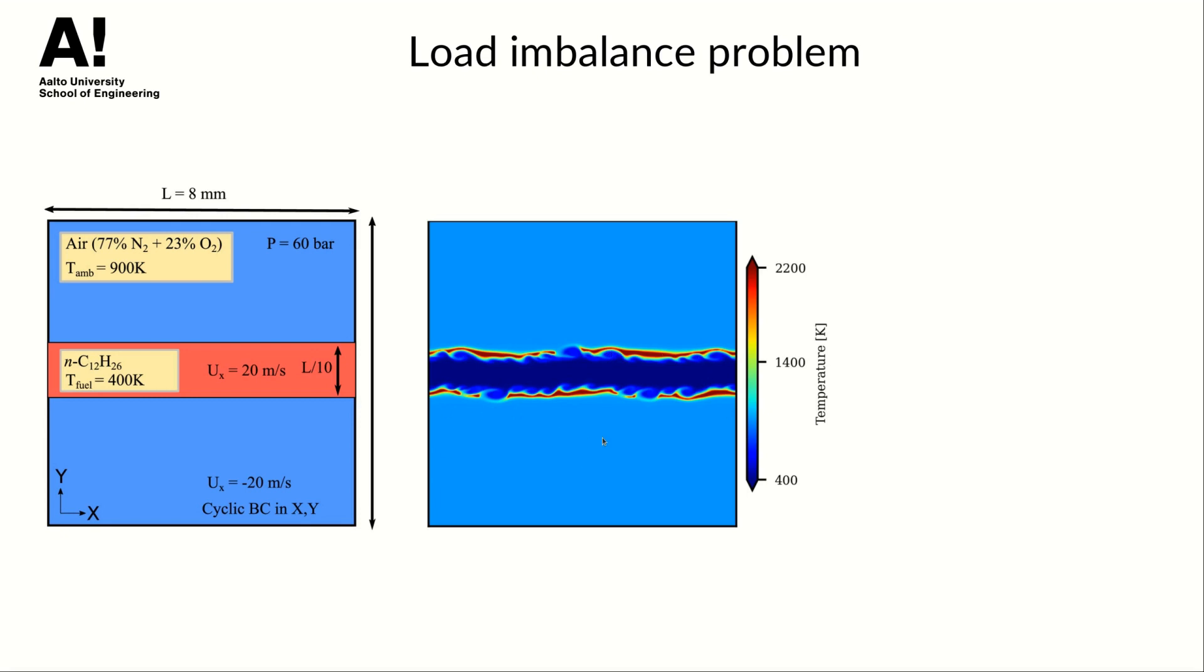As we discussed previously each cell in this domain has its own chemistry problem at every time step. So in a multiprocessor simulation we split the computational domain into a number of subdomains and assign each one to a processor. In OpenFOAM each processor solves only the chemistry problems located in his domain. Here is where the imbalance problem comes from.